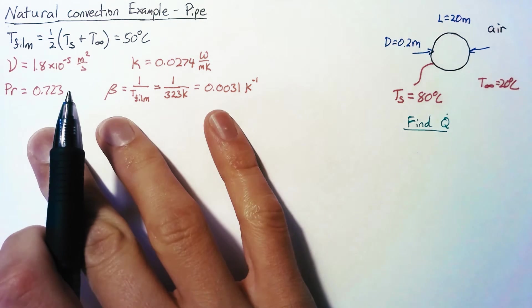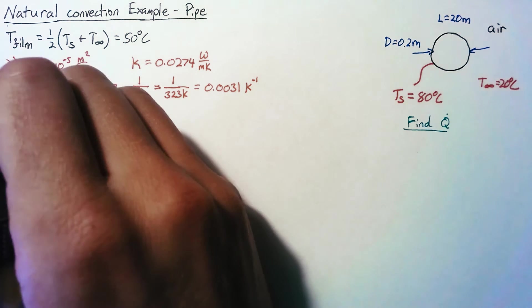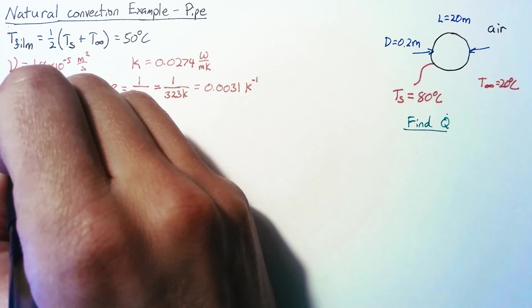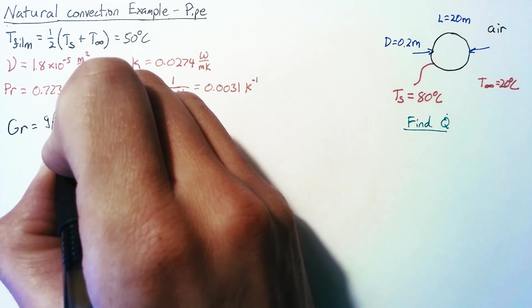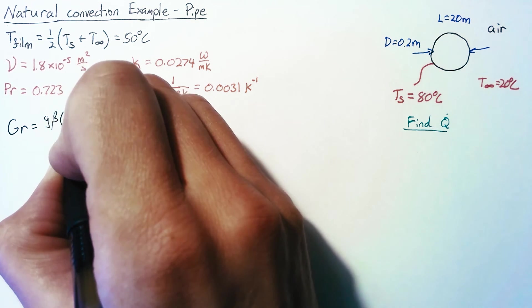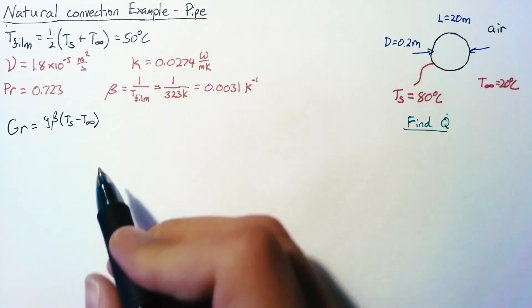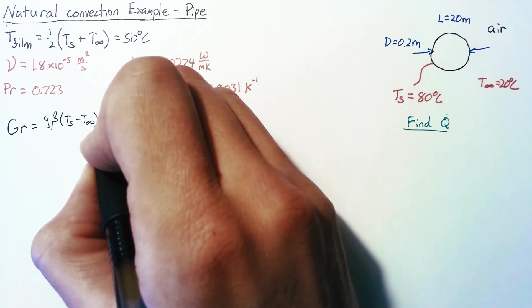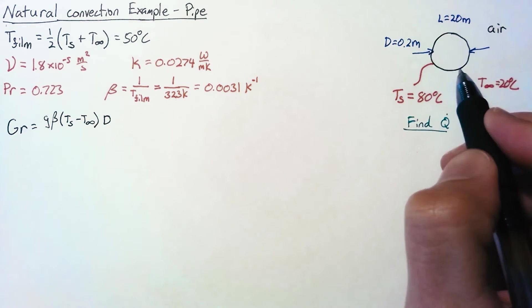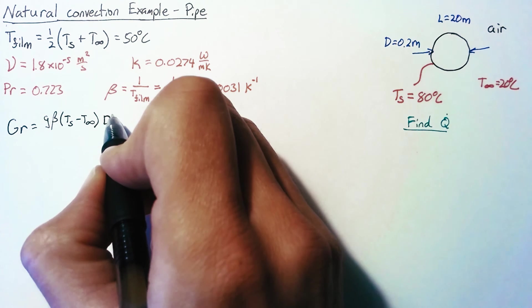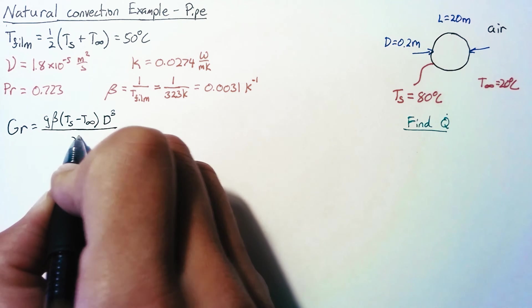So once we have these four values, we're ready to go ahead and start plugging things into equations. The first thing that we should find is the Grashof number. The Grashof number is just G times beta times our difference in temperature, which for us is going to be our Ts minus T infinity. And we always want this to be positive. So I start with the higher temperature. That's going to be multiplied by our characteristic length. For this particular problem, our characteristic length is our diameter. That's going to be D cubed. And that's going to be divided by nu squared.